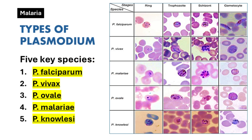Types of Plasmodium: There are five key species of Plasmodium — Plasmodium falciparum, Plasmodium vivax, Plasmodium ovale, Plasmodium malariae, and Plasmodium knowlesi.